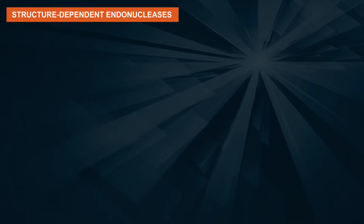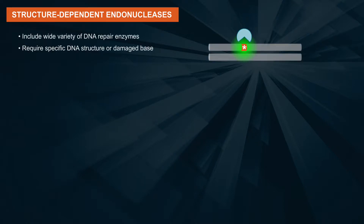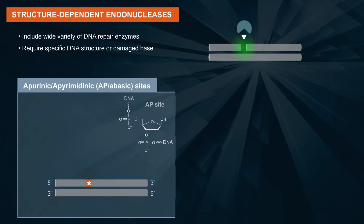Structure-dependent endonucleases, which include a wide variety of DNA repair enzymes, require a specific DNA structure or damaged base for activity and will cleave an internal phosphodiester bond at that structure or damaged base.